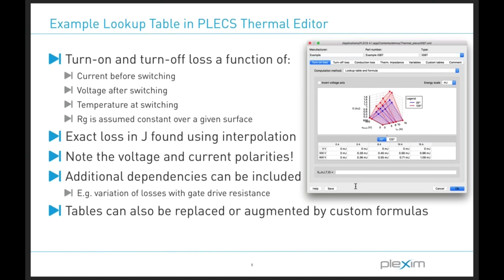How Plex internally uses the lookup tables is straightforward. During the simulation, Plex uses conditions from the electrical circuit, including blocking voltages, conduction currents, and the device's junction temperature, to calculate an appropriate loss value from the lookup tables. Switching losses are inserted into the thermal network as energy impulses, while conduction losses are included during the on state. Losses can also be defined as equations, allowing for additional dependencies such as gate drive circuitry, gate voltage, and stray inductance values.